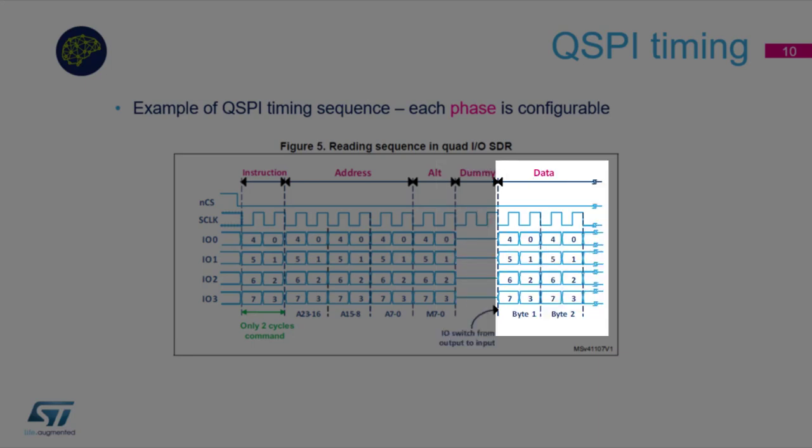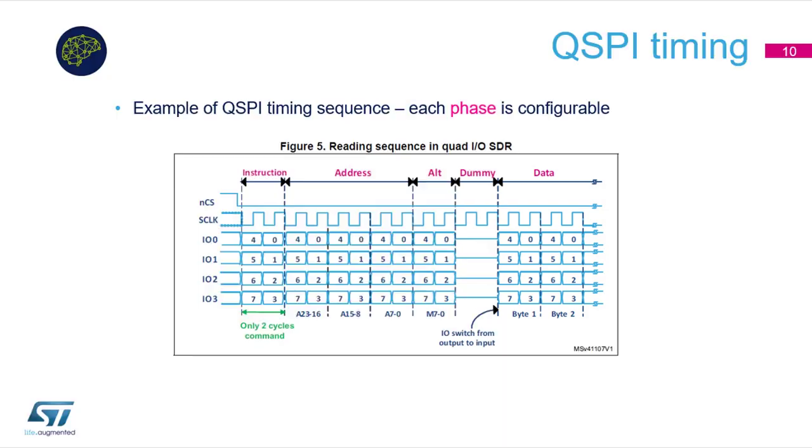Finally, there is the data phase. In this phase the data is sent or received from or to the Quad SPI memory. The data phase is fully configurable, allowing to send, receive, or both, any number of bytes to or from the Quad SPI memory device.